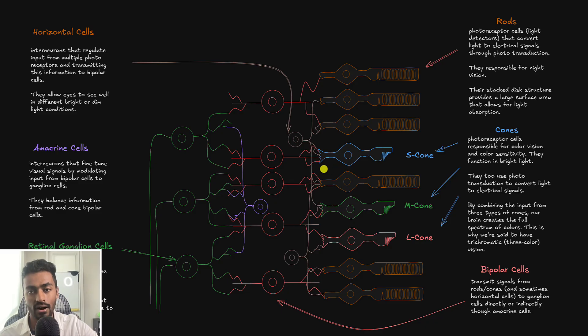Cones, on the other hand, are used for colored vision, and they are sensitive to color in general. And there are three types of cones. We have the S cone, which can absorb blue light. We have the M cone, which can absorb green light, and the L cone, which can absorb red light. And because of this, we can process RGB information and see the world in tricolors.